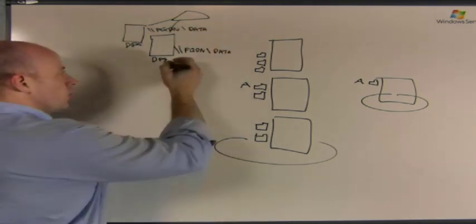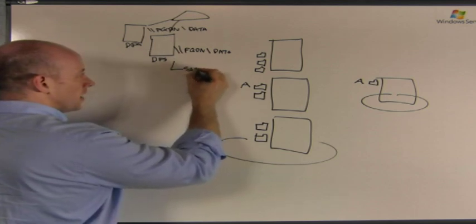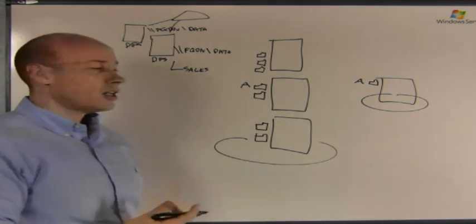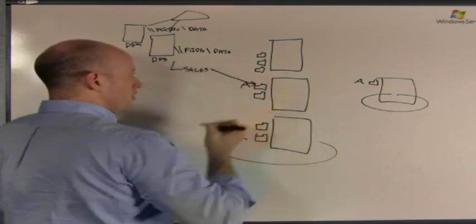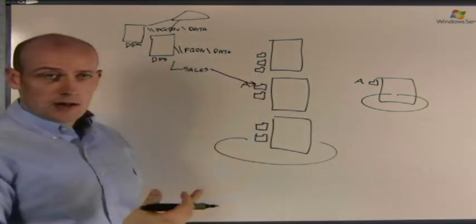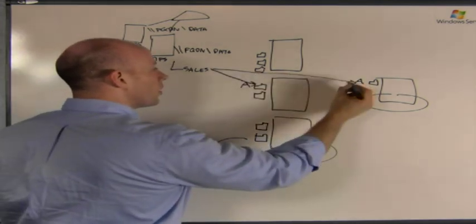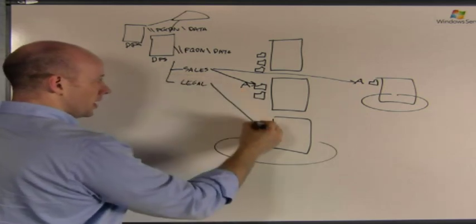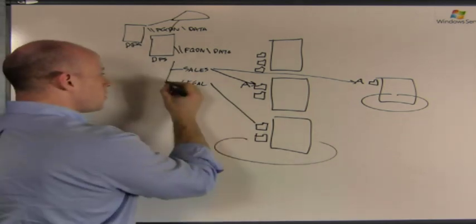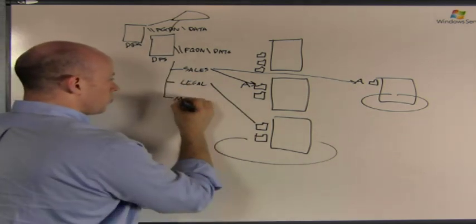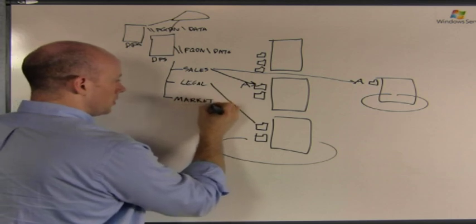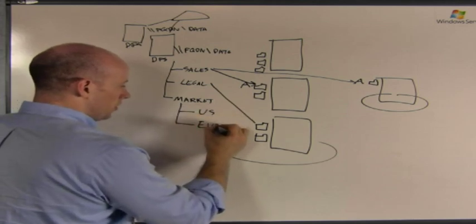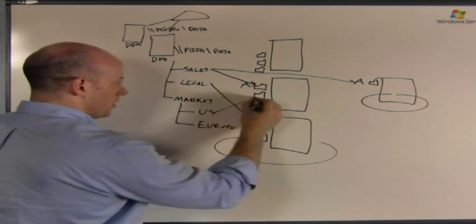Within that namespace, I create folders. So, maybe I create sales. And then I have folder targets. And that folder target points to actual shares on servers. So, it might point to this share here. I have multiple link targets. I can also point to that copy over there. I may have another one, legal. That maybe points to that share over there. I can create folders without any links. Maybe I just create something called marketing. And under that, I could create US, Europe, and they have links.